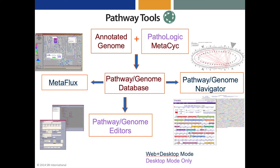Here's an overview of the main components of Pathway Tools and how they work together. One first imports an annotated genome into the Pathway Tools environment in the form of a GenBank file or GFF file. The Pathologic component creates a new pathway genome database that combines the annotated genome with inferred information such as a metabolic reconstruction for the organism. The Pathway Genome editors can be used to interactively update that database, such as by adding a new metabolic pathway, a new metabolite, or changing a gene function. The Pathway Genome Navigator enables the user to search and navigate this pathway genome information space, as well as to perform omics data analyses. The Metaflux component lets one build a quantitative metabolic flux model using flux balance analysis from a pathway genome database.